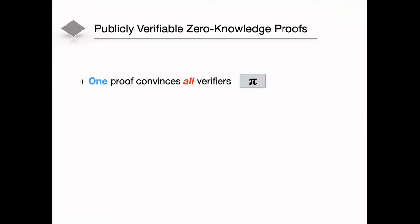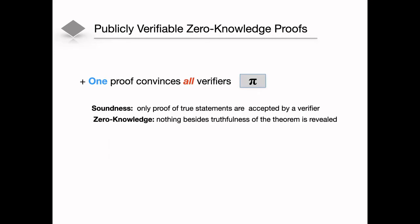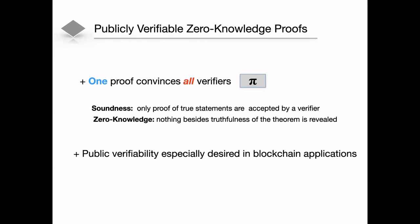So what is a zero-knowledge proof? It's a protocol between a prover and a verifier where the prover wants to prove to the verifier that some statement is true. If this proof is publicly verifiable, it means that one proof can convince many verifiers. We ask that this proof should be sound and zero-knowledge, where soundness means that a malicious prover cannot convince an honest verifier of a false statement, and zero-knowledge means that nothing except that the statement is true will be learned by a malicious verifier. This type of proof, since it is publicly verifiable, can be posted on blockchain and everyone reading it can understand if the statement was true or not.